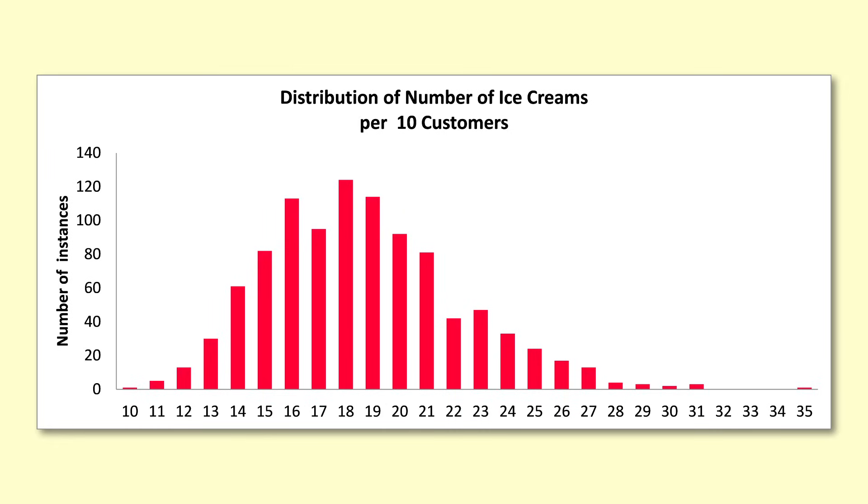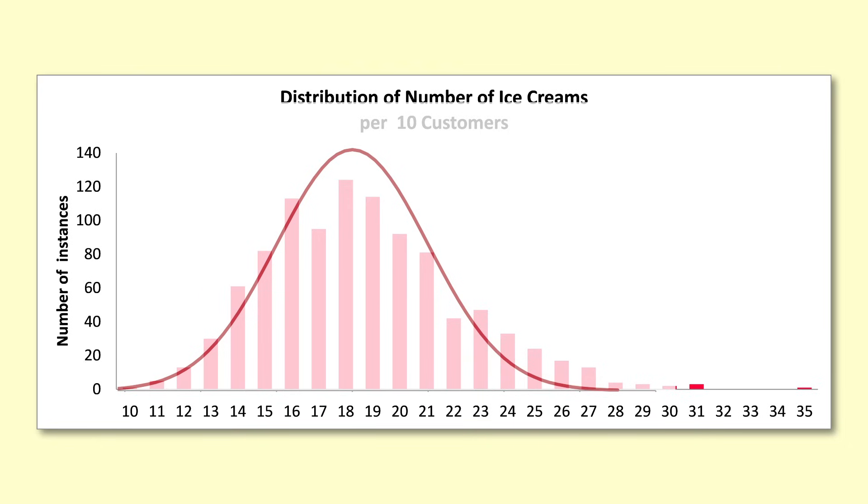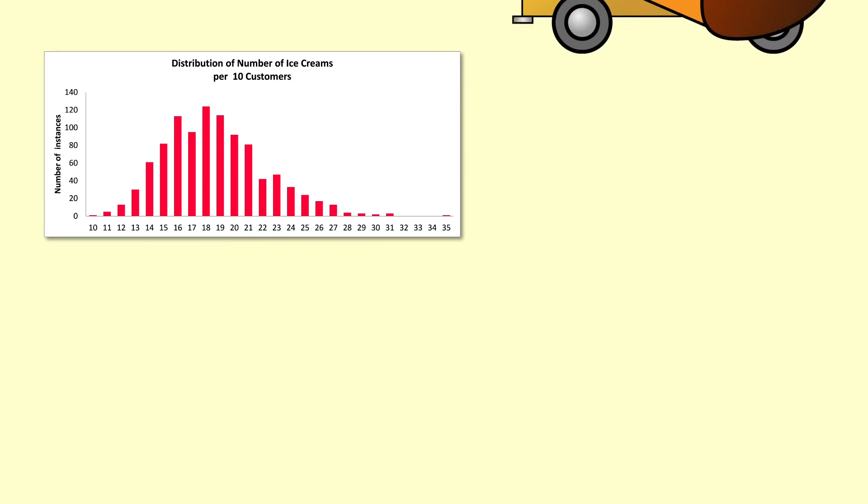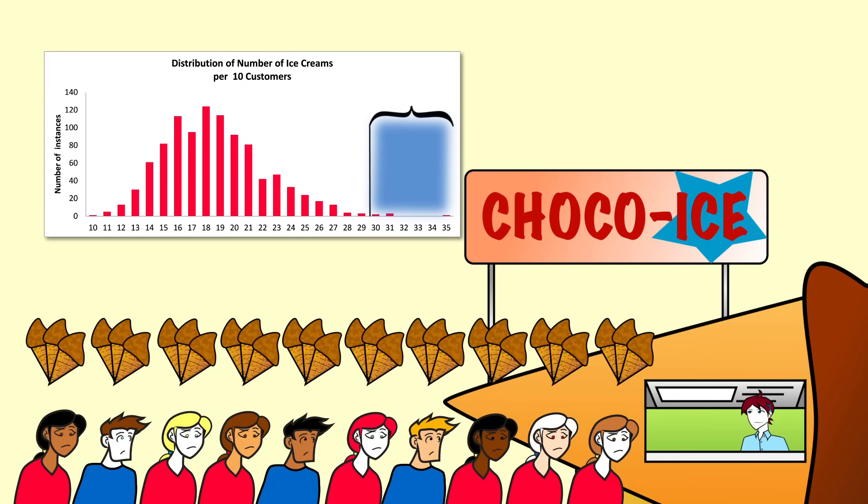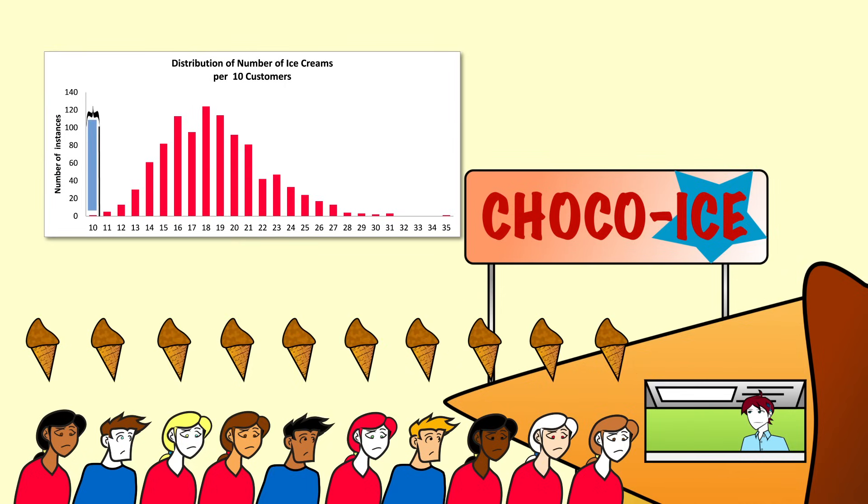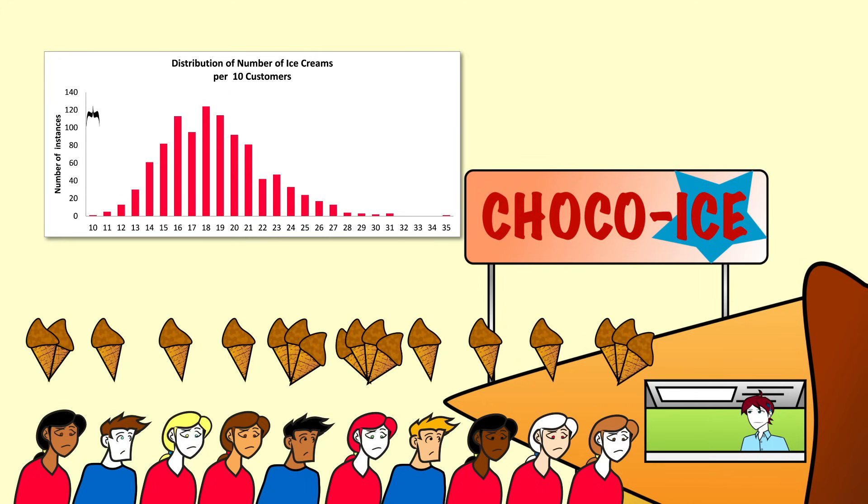We see that the shape of the graph starts to look more and more like a normal distribution. For ten customers to order a total of thirty or more ice creams, they would all need to order about three ice creams each, which is pretty unlikely. Similarly, it is pretty unlikely that all ten people will order just one ice cream for a total of ten. Most of the time the values will be much less extreme.